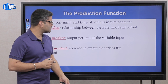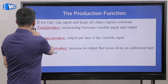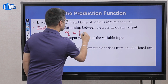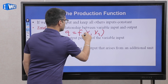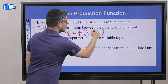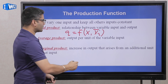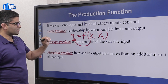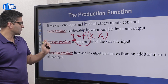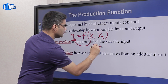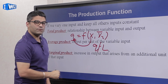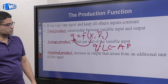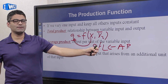Total product is the relationship between total output that a business produces and it's a function of inputs. Given two inputs, we keep one fixed and look at the relationship between the one we let vary — x1 — and the output produced. Average product tells you on average how much output your inputs produce, which is total product divided by the labor you hire.